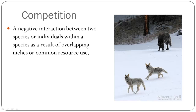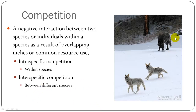Competition is the next type — a negative interaction between two species. They're both generally going for the same resources, so the presence of one negatively affects the other and vice versa. This happens when you have an overlapping niche or common resource use. Intraspecific competition would be between individuals of the same species, like two coyotes competing if there are too many in an area. Interspecific competition is between different species — wolves and coyotes generally use similar resources, though wolves are bigger and can take down larger prey.